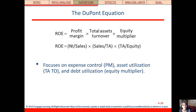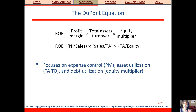It's breaking those pieces down so you know what's driving ROE, because it's such an important ratio. There are three pieces: profit margin, total asset turnover, and equity multiplier. Each of those is measuring something different — it comes from a different category.